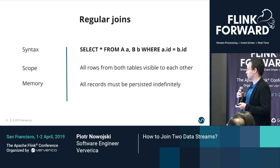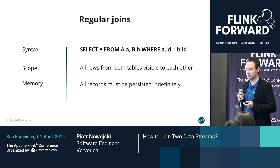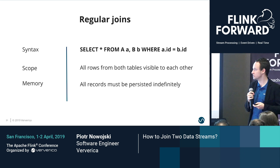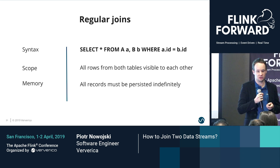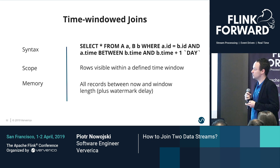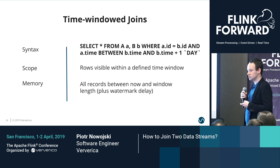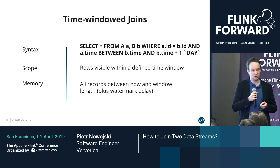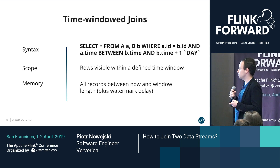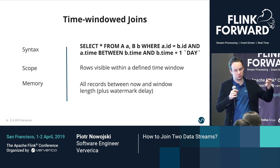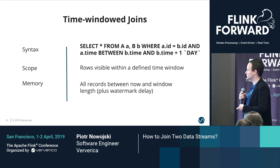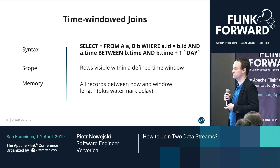First, we talked about regular joins. Here we join all records from both tables with one another, and the problem is memory consumption or resource usage, because we have to keep all records in state indefinitely to have accurate results. With time windowed joins, we restrict the scope of the join to a predefined static time window. Thanks to that, we reduce memory consumption and only need to keep all records between now and window length plus watermark delay. However, all records will eventually fall out of this predefined static time window, and we will remove them from state.